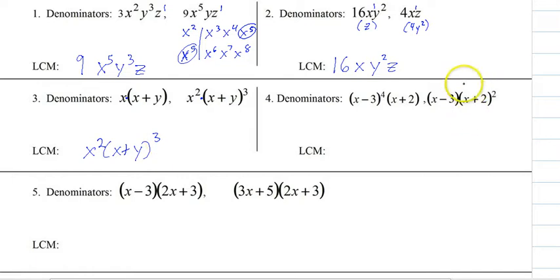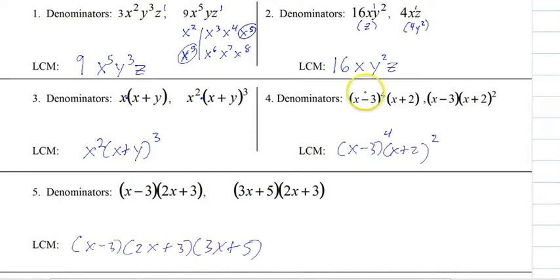Give this one a shot. Hit pause and try it. Try 4 and 5 since it's on the screen. And there you go. Those are the two you should get. So the only factors we have here are X minus 3 and X plus 2. And the largest exponent for the X minus 3's is 4, and the largest exponent for the X plus 2's is 2. So there is the LCM.